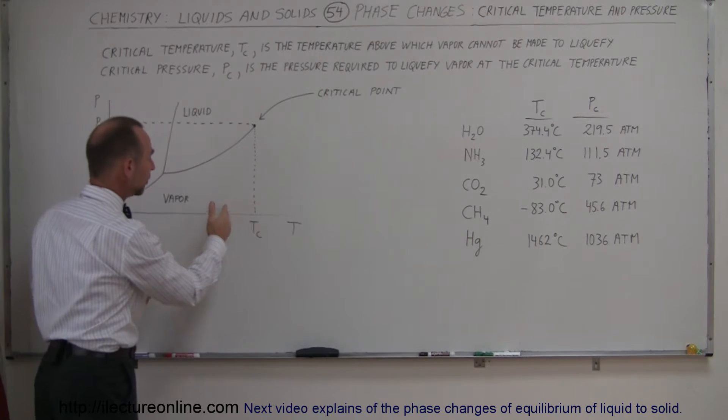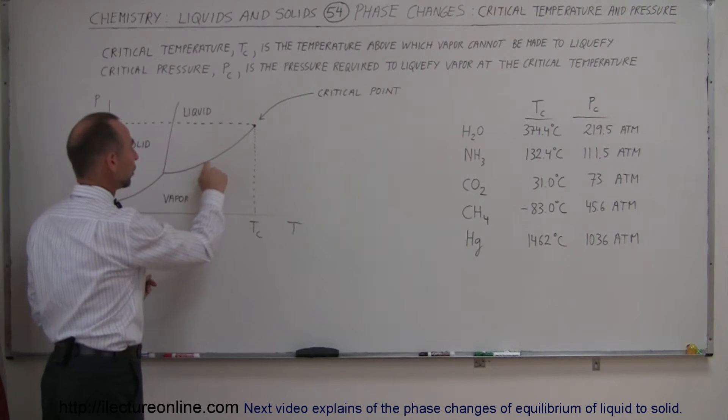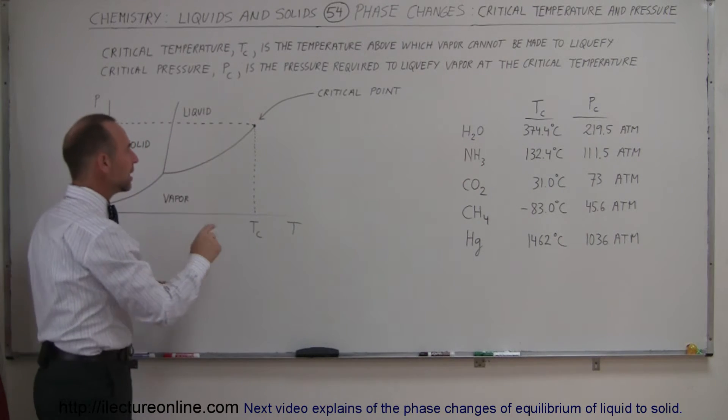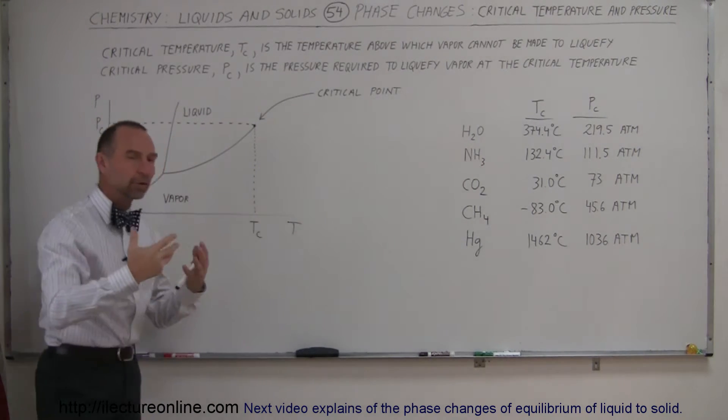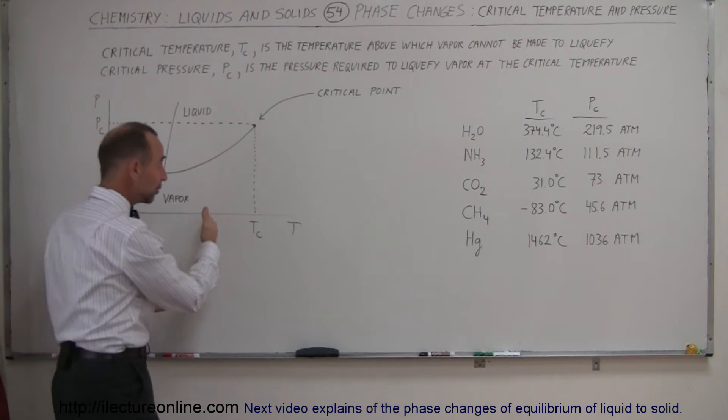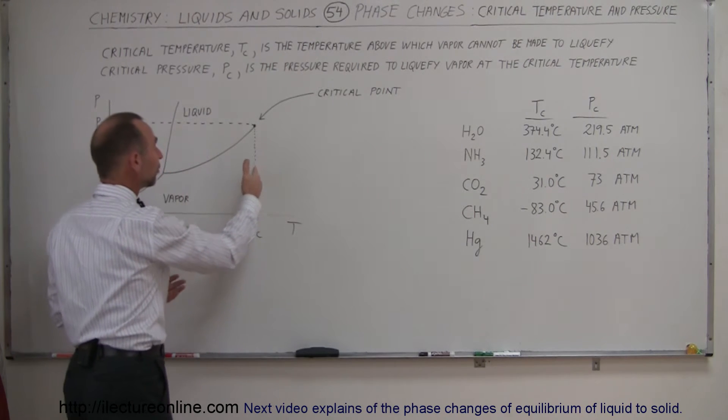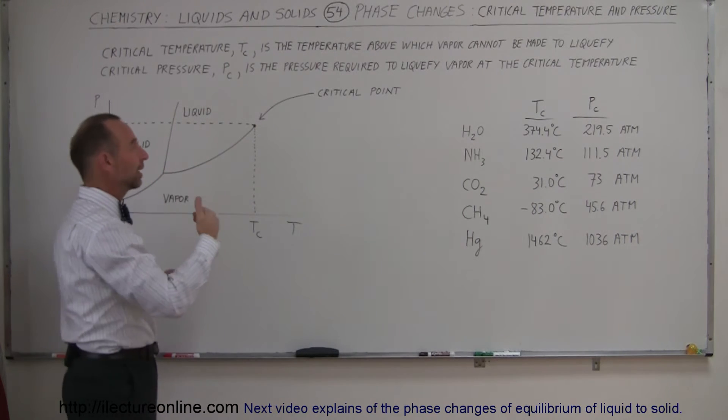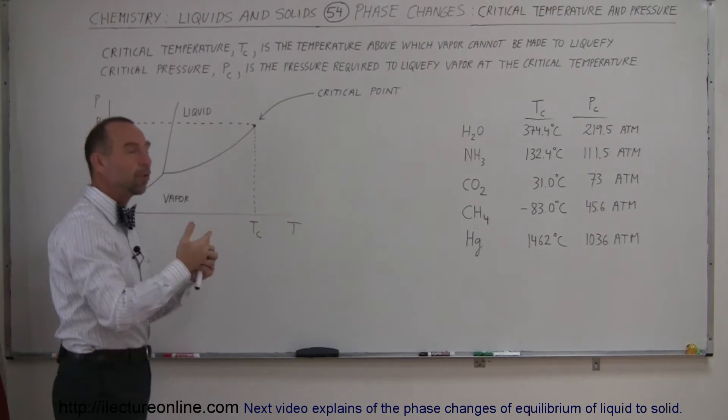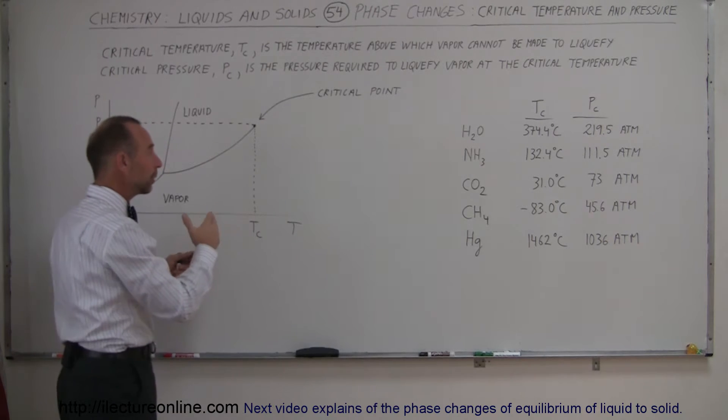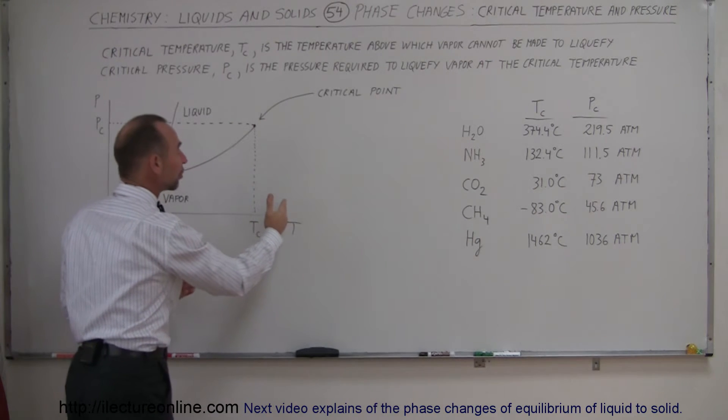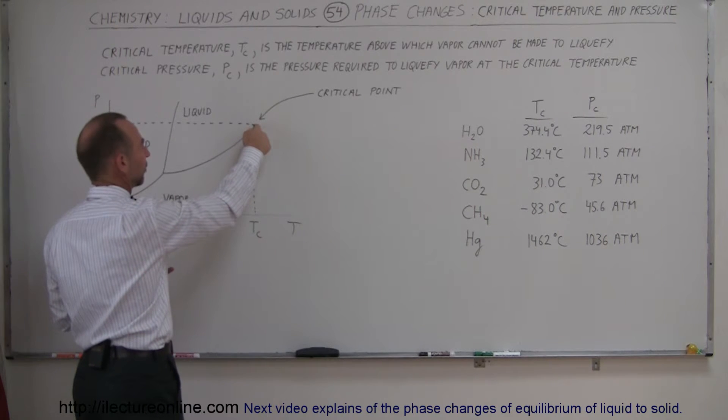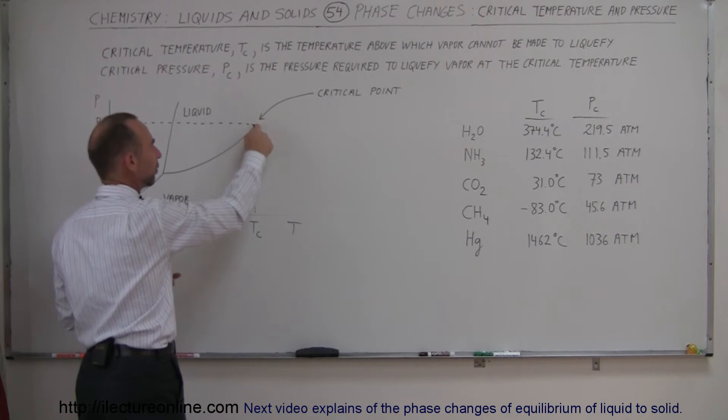Notice as the temperature increases, the amount of pressure required to turn the vapor into a liquid increases as well. But at some point, the energy within the molecules would be so great, as the temperature increases more and more, that there'll be some point at which you cannot apply any sort of pressure and turn it into a liquid. In other words, there's no pressure great enough to turn a vapor into a liquid beyond a particular temperature, and that is called the critical temperature. And in this diagram, it's shown right here. This is what we call the critical point.